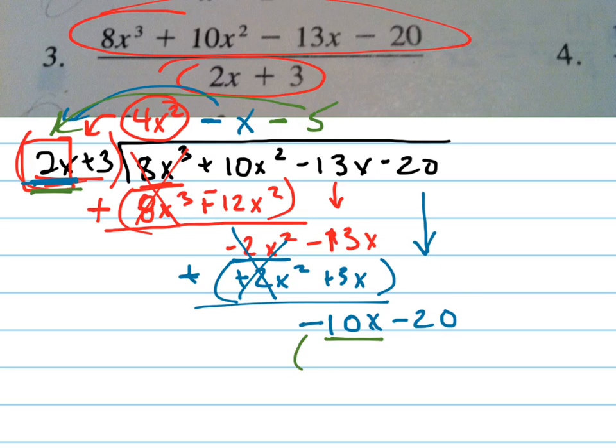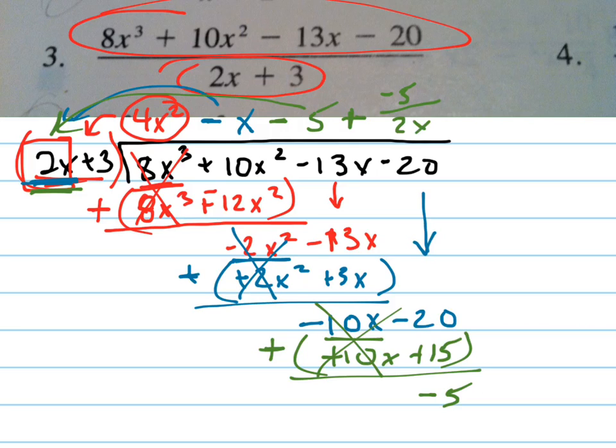Multiply it by both of those and put it here. Negative 10x minus 15 is your answer. Subtract that, which means distribute that in. Those go away. You're left with negative 5, so your remainder is negative 5 over 2x plus 3. That's your answer, the blue side here with these little hints.